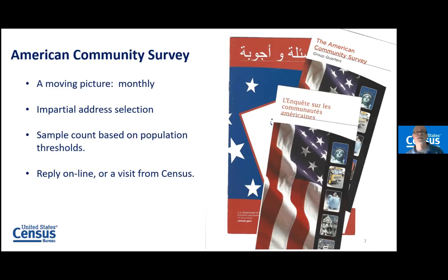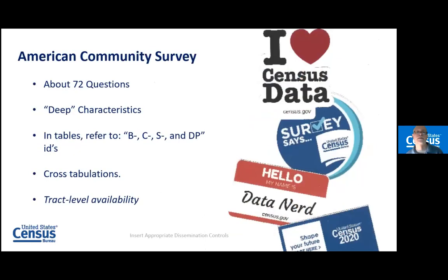Just like the 10-year census, you'll get a card or letter beforehand telling you the ACS is coming. Then about a week later you get a paper form — it says you can do it online or on paper. If we don't get it back that month, the next month you'll most likely get a field representative visiting you with a computer that has a Census Bureau decal. They ask you the questions and enter them directly. The ACS has 72 questions, so we're really getting beneath the surface — asking deep characteristics about what is happening in your household.